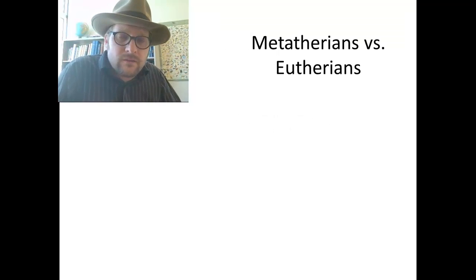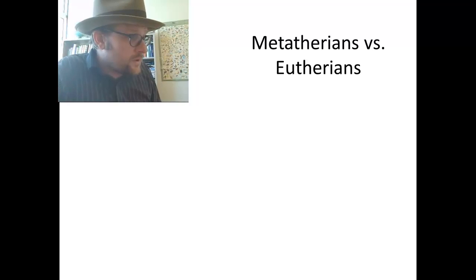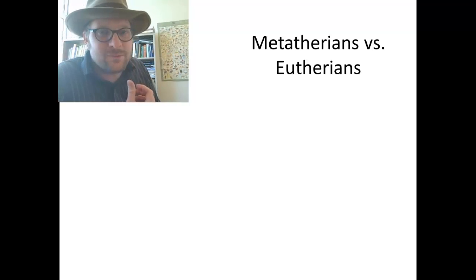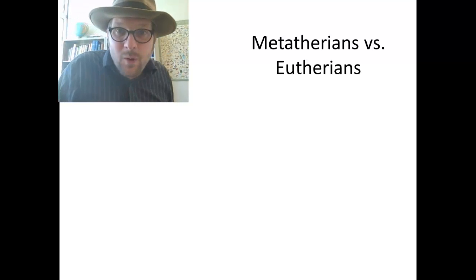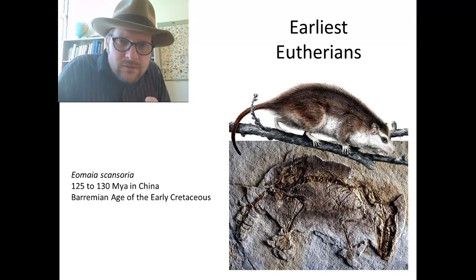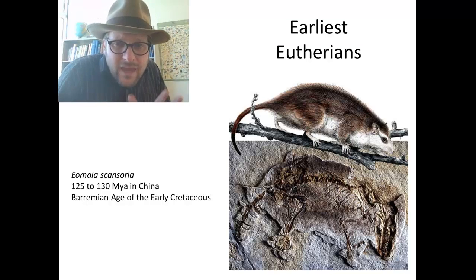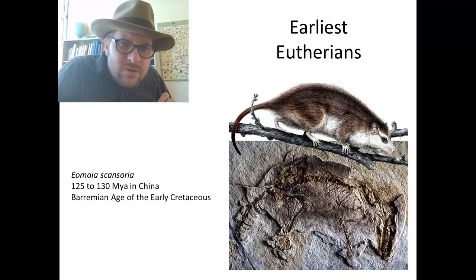Now these fossils are often not called placental or marsupial mammals — we refer to them as metatherians and eutherians. Metatherians are the group that will eventually lead to marsupials, and eutherians are the larger group including animals that will lead to true placentals. We use these terms because we can't view how the reproductive system works in fossils. The earliest eutherian is Eomaia scansoria, a little teeny possum-like mammal with some preservation of fur.